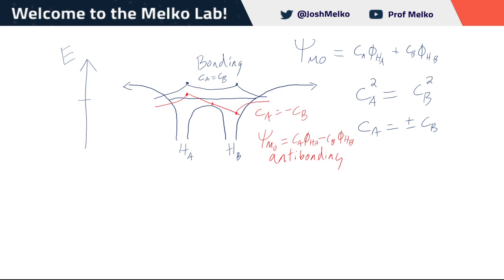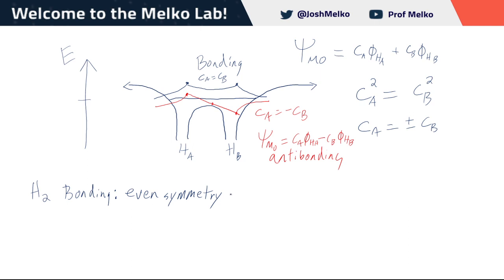Now we're going to expand this and talk about how we have terminology for these molecular orbitals. Both molecular orbitals are possible, and we differentiate them. If we wanted to refer to them, we need some way to refer to these with some terminology. We'll start with the bonding molecular orbital here, which we call having even symmetry. We're going to make the terminology reflective of the symmetry of these molecular orbitals. Even symmetry means the bonding molecular orbitals won't always be even symmetry — it just is in this case for hydrogen.